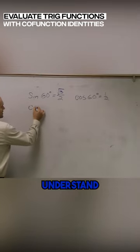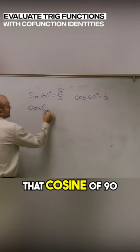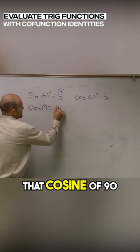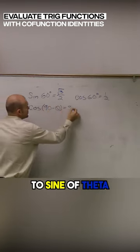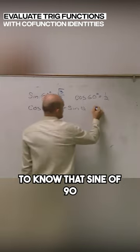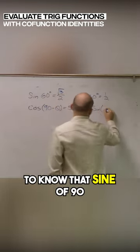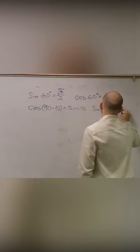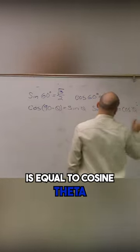We need to understand that cosine of 90 minus theta is equal to sine of theta. And we also need to know that sine of 90 minus theta is equal to cosine of theta.